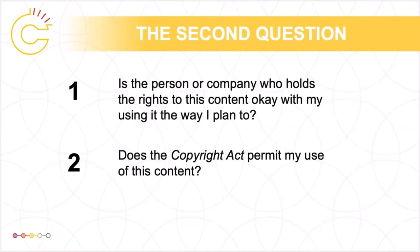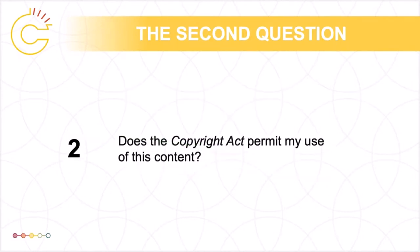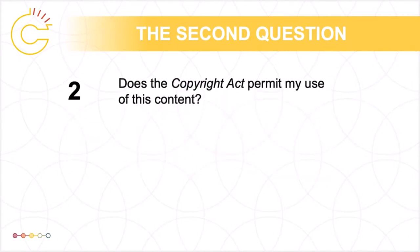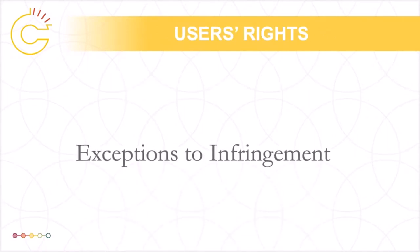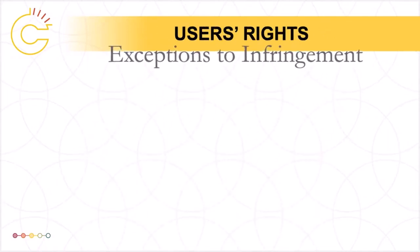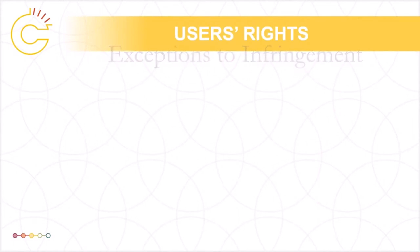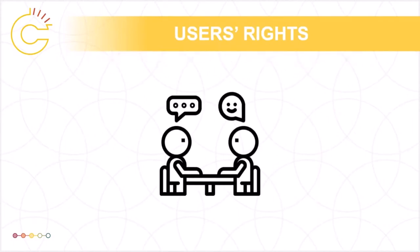Coming back to our two questions: if the rights holder is okay with your use of the work, you don't need to think about the second question and can go ahead with your use. If they're not, though, the second question you should ask yourself when using third-party content is: does the Copyright Act permit my use of this content? The Copyright Act includes exceptions to infringement, also known as user's rights. These provisions set out limited and specific ways that Sandy can use third-party content without the need to ask permission of the rights holder or pay royalties.